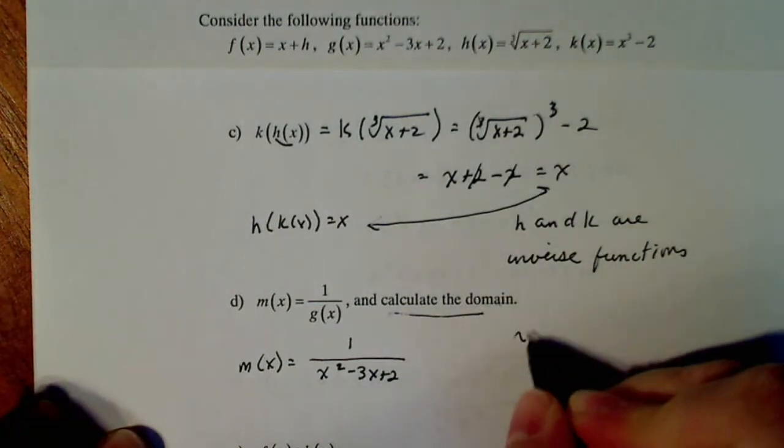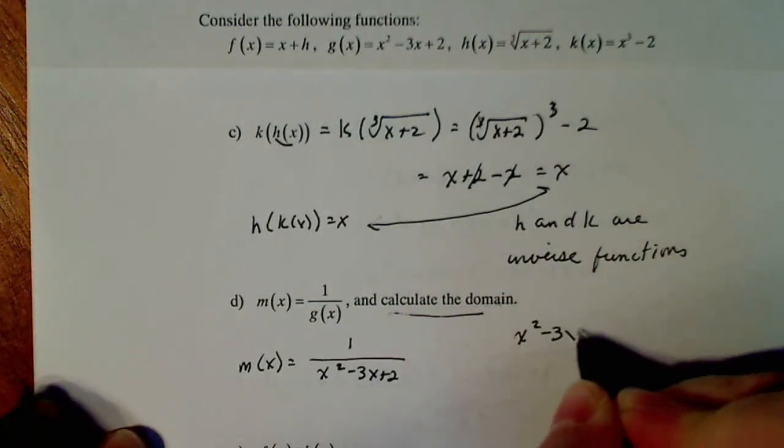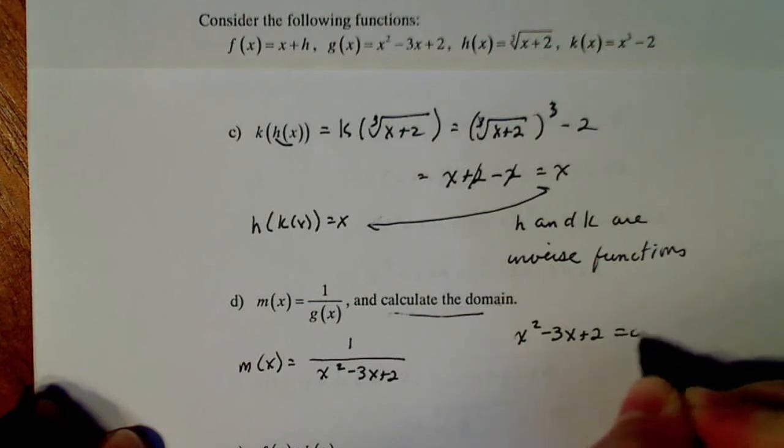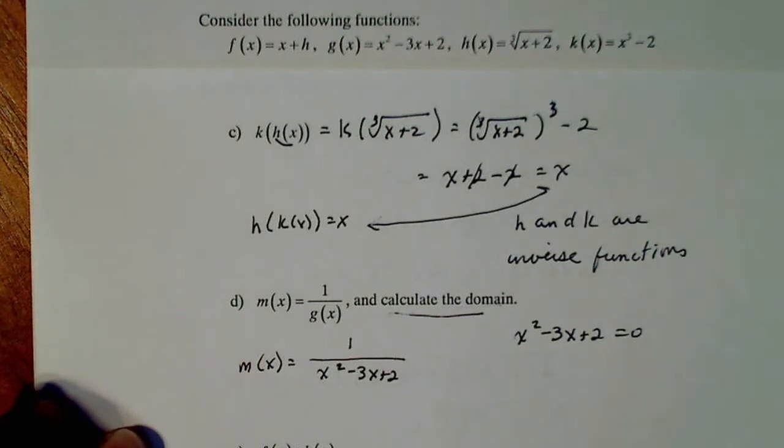We need to make sure X squared minus 3X plus 2 stays away from zero. If we find the X values where it equals zero, we can exclude them from the domain.